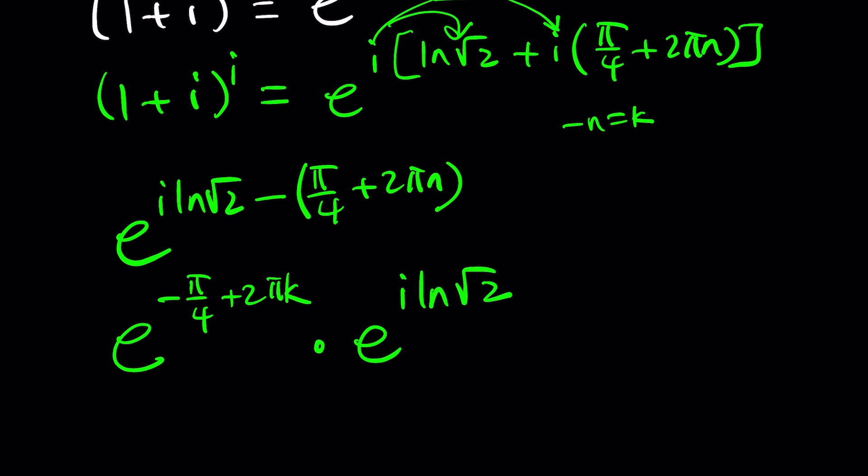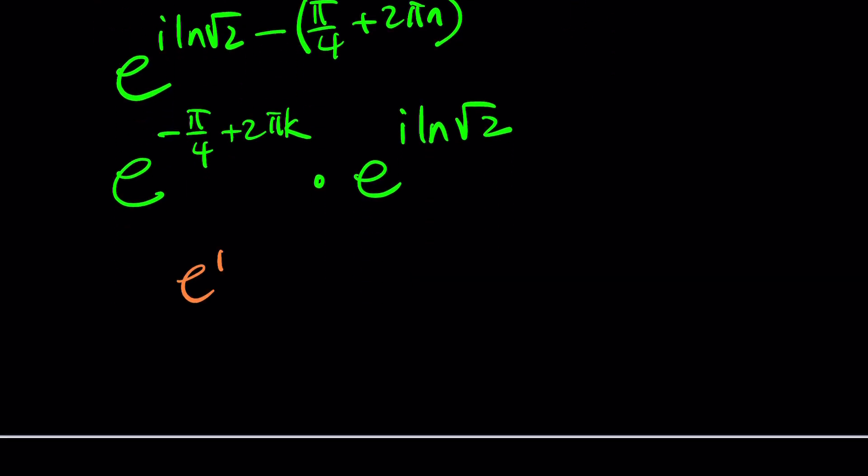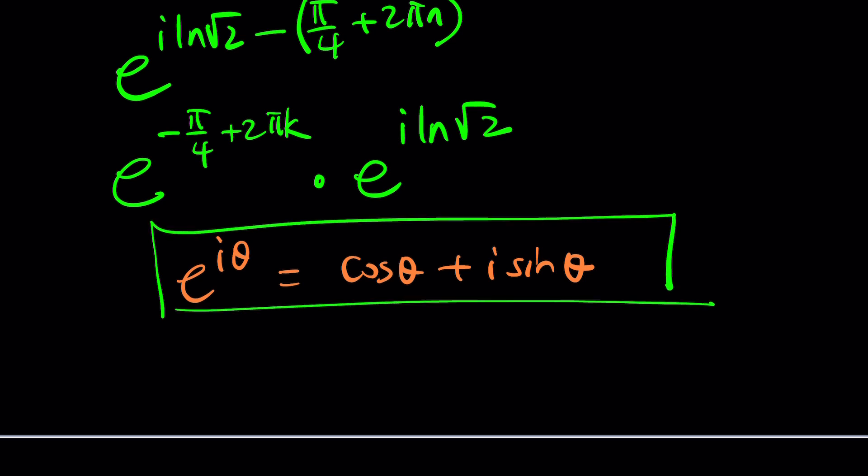Because Euler's formula. Euler said e to the i theta is cosine theta plus i sine theta. It's the most beautiful equation in math. There's nothing more beautiful than that. So we can go ahead and use it here, which means this is our theta. Make sense? So here's what it's going to look like at the end. e to the power negative pi over 4 plus 2 pi k. Again, k is an integer. You can replace k with anything you want.